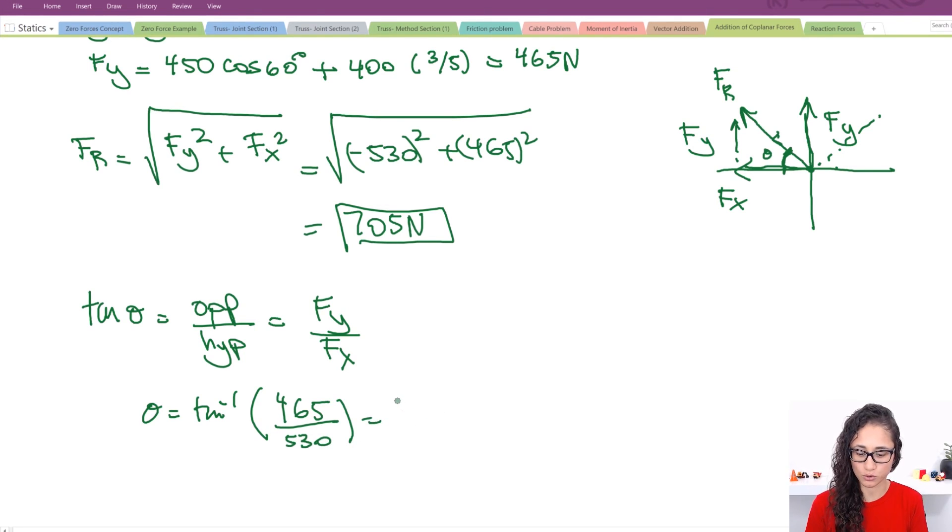And this is equals to 41.3 degrees. So if you keep a negative here, that would give you a negative answer. But it is just, it will tell you that your theta is in this coordinate and it's not on this coordinate right here. But theta, it would still be 41.3 degrees from here to where your Fr is.